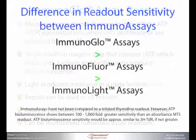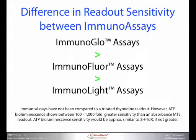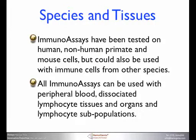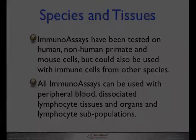The assays are calibrated, fully standardized, and validated, and they can also be multiplexed with numerous other assay readouts. There is a difference in readout sensitivity, with the ImmunoGlow assays being the most sensitive and the ImmunoLight assays the least sensitive. ATP bioluminescence shows between a hundred- and a thousand-fold greater sensitivity than an absorbance MTS readout, and the ATP bioluminescence sensitivity would be approximately similar to tritiated thymidine, if not greater. ImmunoAssays have been tested on human, non-human primate, and mouse cells, but could also be used with immune cells from many other species. All ImmunoAssays can be used with peripheral blood, dissociated lymphocyte tissues and organs, and lymphocyte subpopulations.